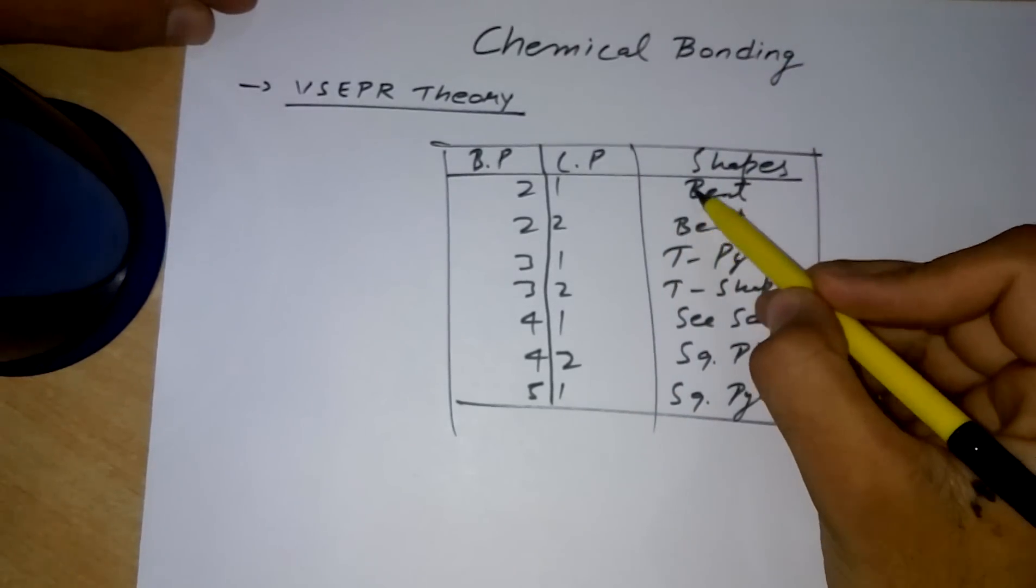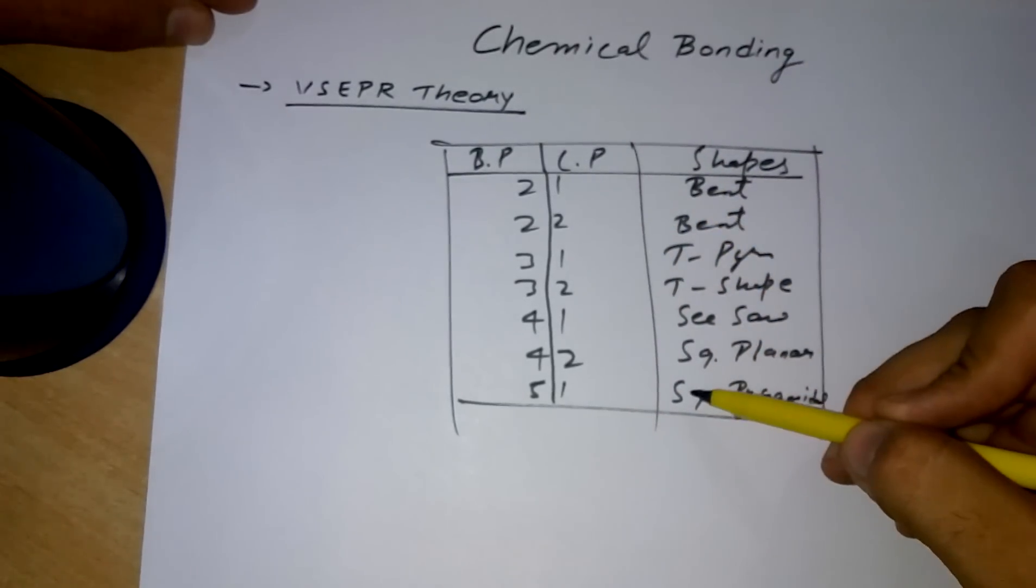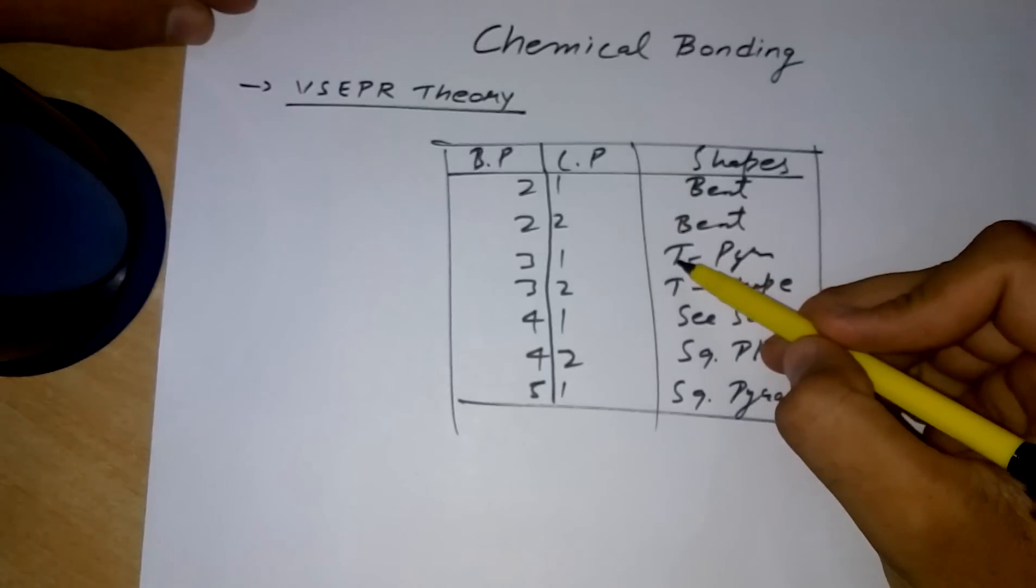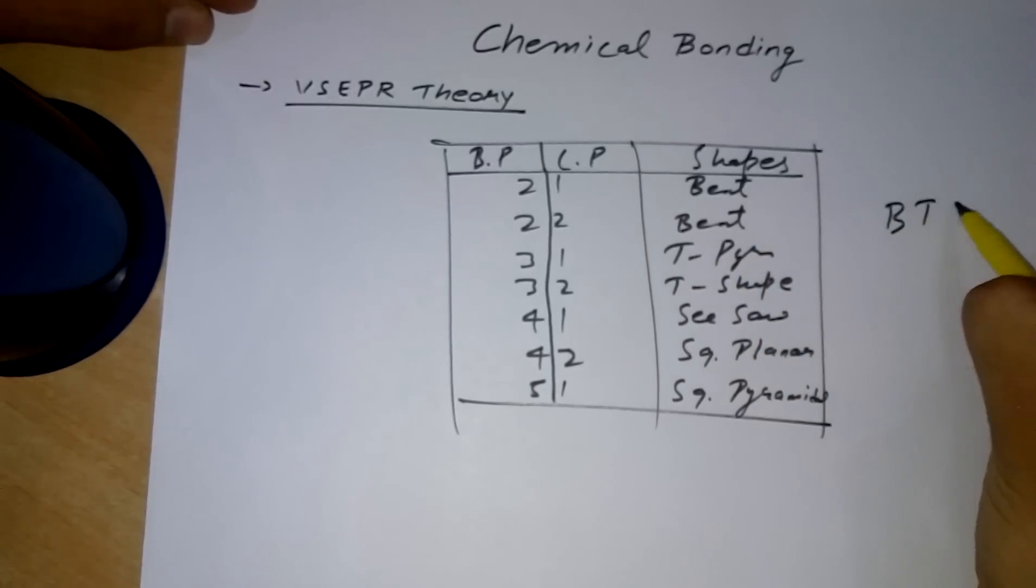Yes, look: B comes before everything alphabetically. But you will say T comes after S, but you just remember BTSS - just beat everyone with an S at last.